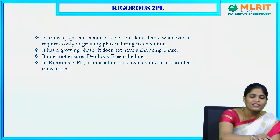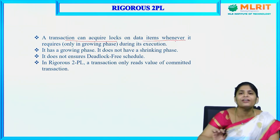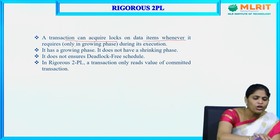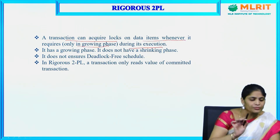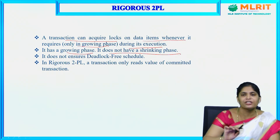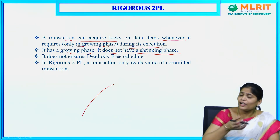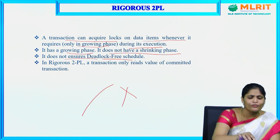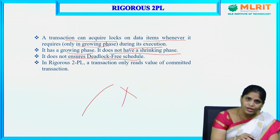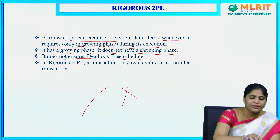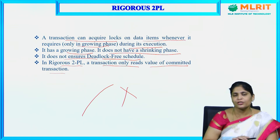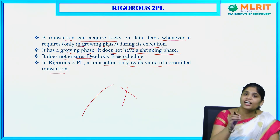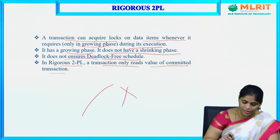Rigorous 2PL: a transaction can acquire locks on data items whenever it requires them, only during the growing phase of its execution. It does not have a shrinking phase. Whenever a lock is required it is acquired, but it does not ensure a deadlock-free schedule. In rigorous 2PL, a transaction only reads a value from another transaction if that transaction has committed.